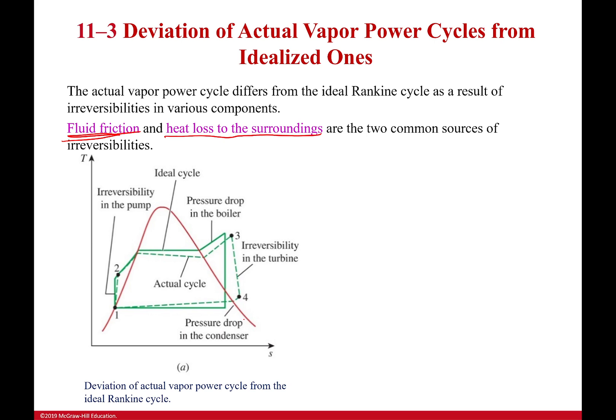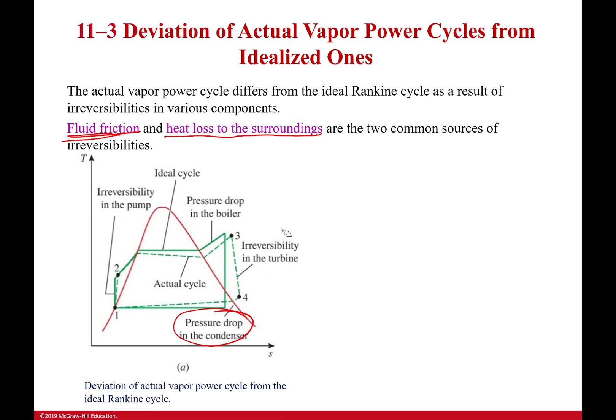We've got pressure drops — pressure drops in the boiler, irreversibilities in the turbine and in the pump — all these things are causing issues. I could try to correct for all of them, but that would be incredibly difficult. We still need to make this as simple as possible to do our calculations with the tools we have, otherwise we'd need a computer.